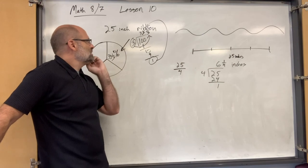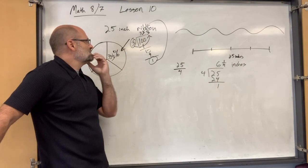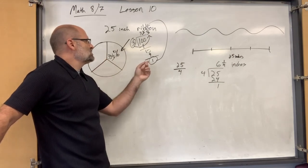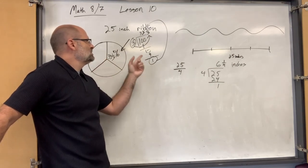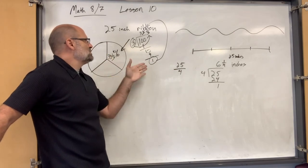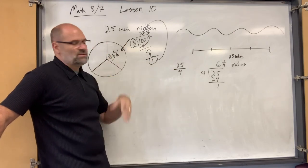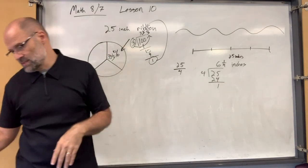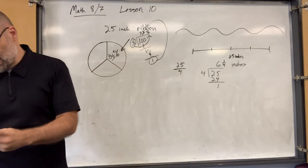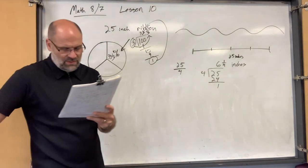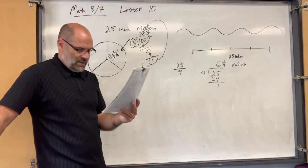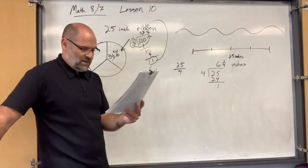Here's a common mistake: the remainder is not always going to equal the denominator. You can sometimes reduce the fraction too. Let's try a couple more examples and figure it out.